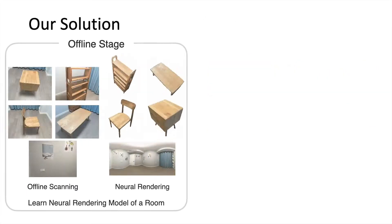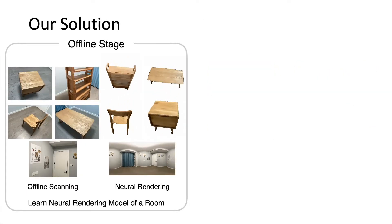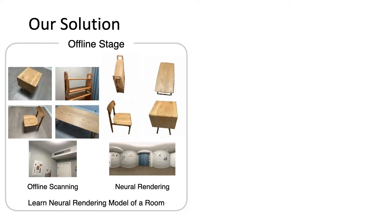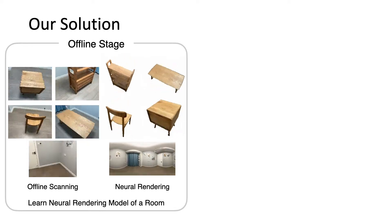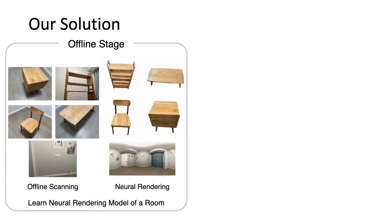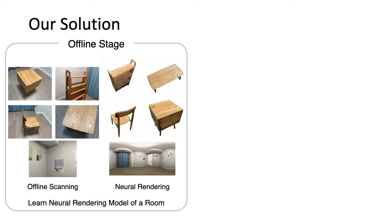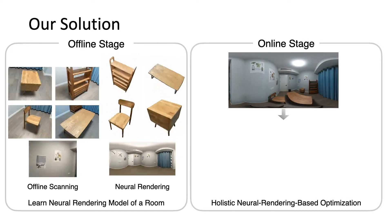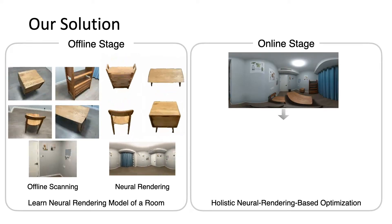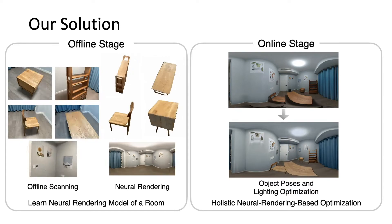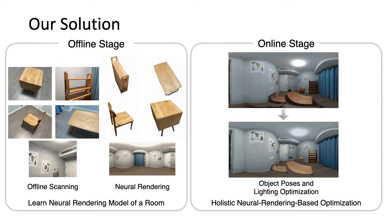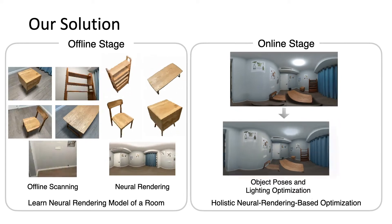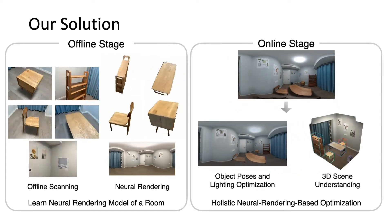Here is our solution. Inspired by a modal scene perception of human beings, we first learn all the neural rendering-based prior knowledge of the objects in a closed room via an offline stage. Then during the online stage, given a panoramic image of the scene, we use a holistic neural rendering-based optimization to estimate object arrangement and lighting condition, which yields 3D scene understanding.